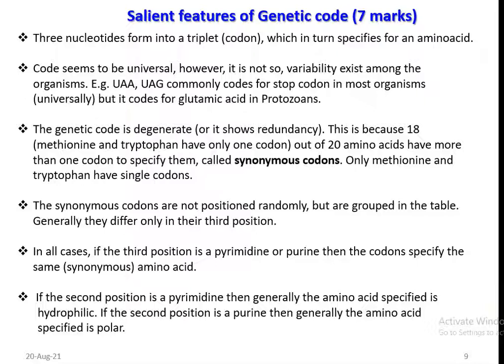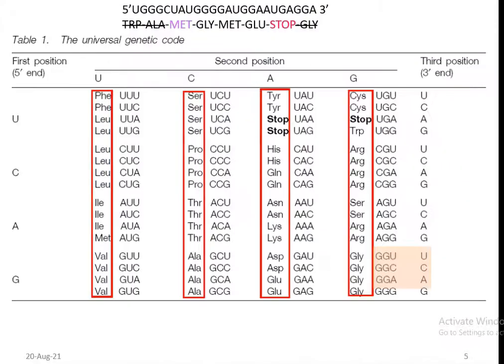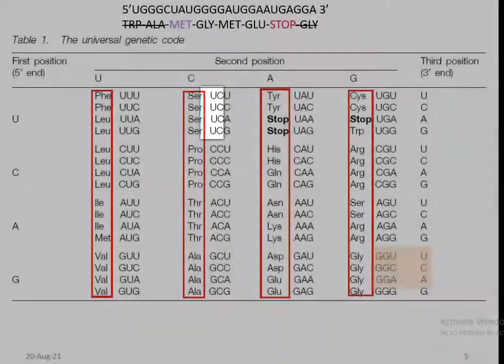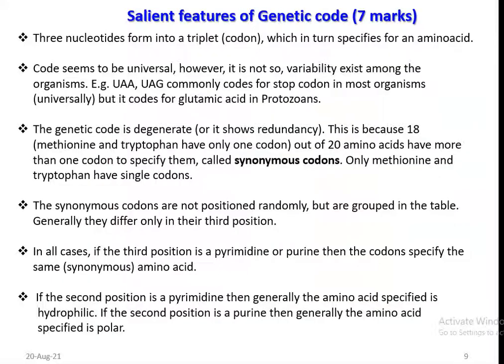The synonymous codons are not positioned randomly but are grouped in the table. Generally, they differ only in the third position — that is, only the third nucleotide has a change in synonymous codons. For example, looking at the synonymous codons of serine, only the third nucleotide changes while the other two nucleotides are commonly U and C. In all such cases, if the third position is a pyrimidine or a purine, the codons specify the same amino acid.